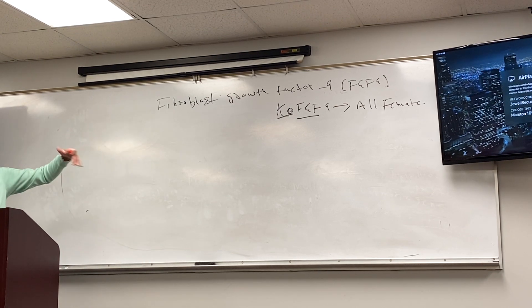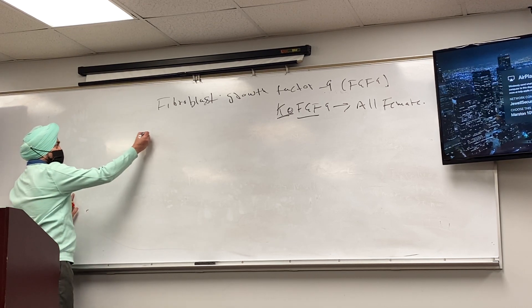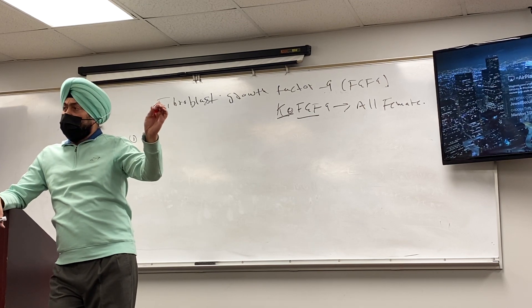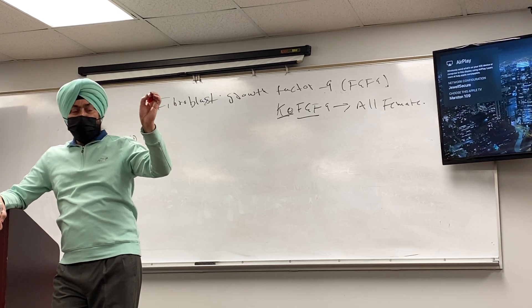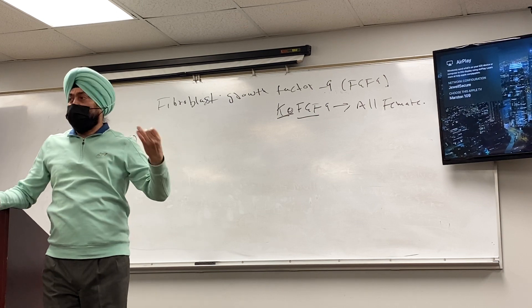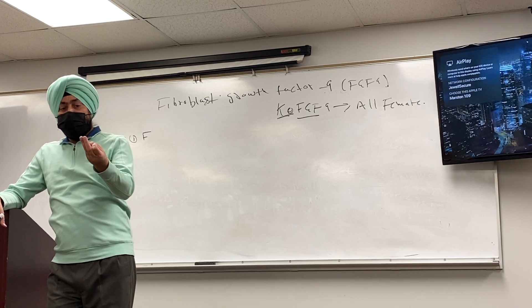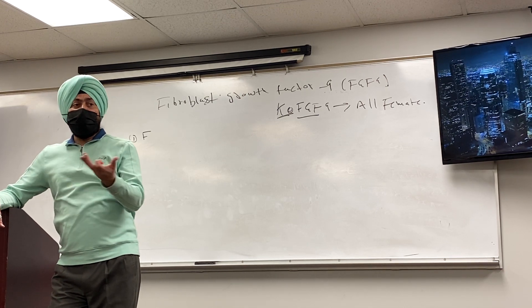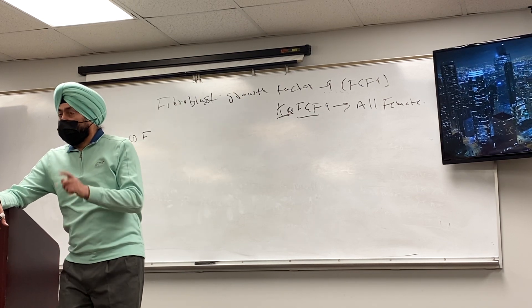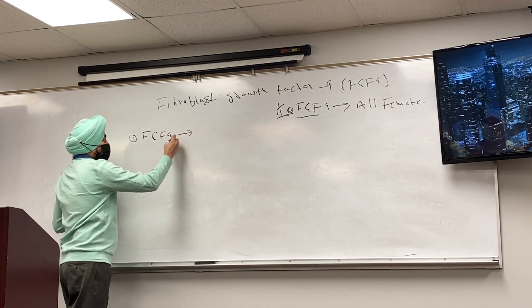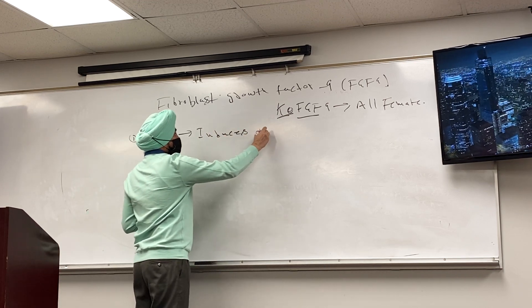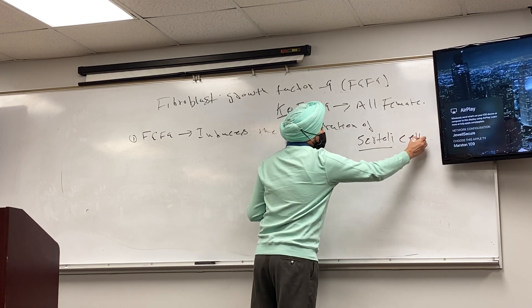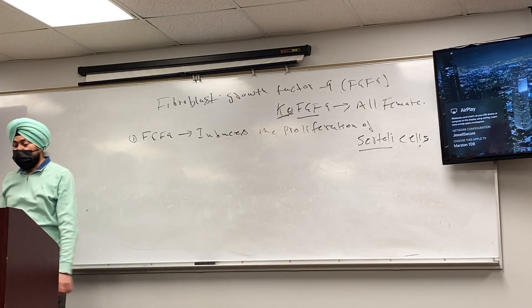FGF9 is activated by SOX9. When the germ cell enters the developing gonad, if it is XY, the mesenchymal germ cells divide and change into Sertoli cells, and then Sertoli cells proliferate. Remember what Sertoli cells were doing — they were making anti-Müllerian hormone. If they are not there, anti-Müllerian hormone will not be produced, and you will have oviduct formation. So FGF9 induces the proliferation of Sertoli cells.